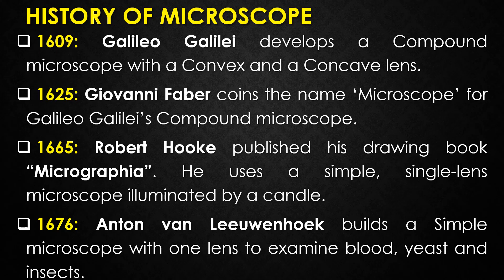Robert Hooke was the first person to use the word 'cell' when describing living organisms. In 1676, Antonie van Leeuwenhoek — widely known as the father of microbiology and the father of microscopy — built a simple microscope with one lens to examine blood, yeast, and insects. Leeuwenhoek was the first to observe bacteria, and he invented a new method for making lenses that allowed magnification of up to 270 times.